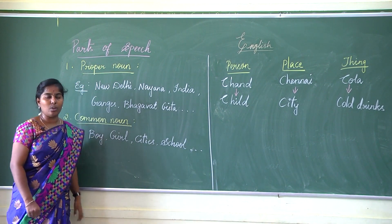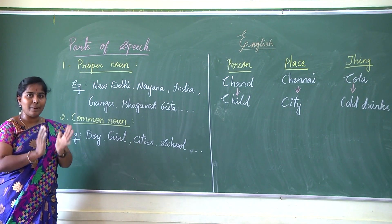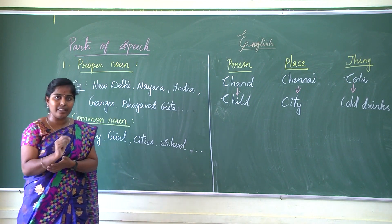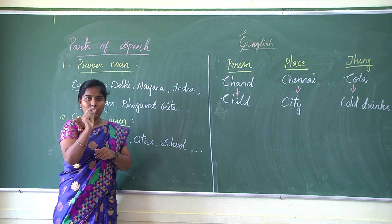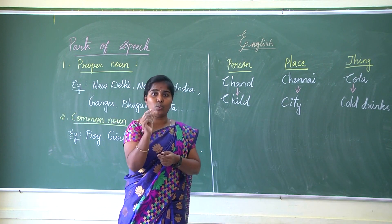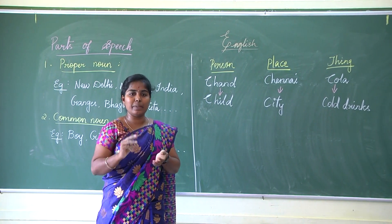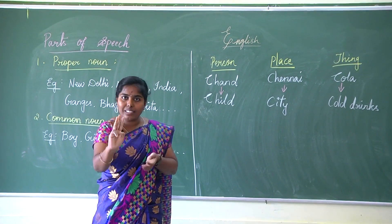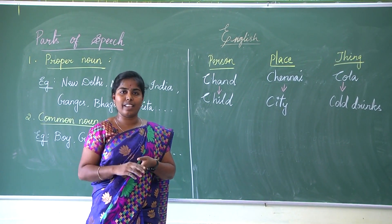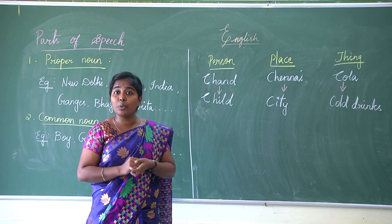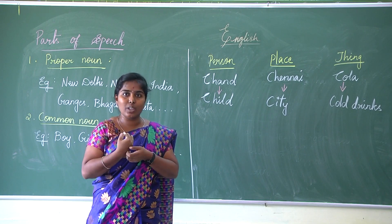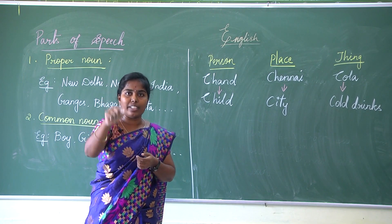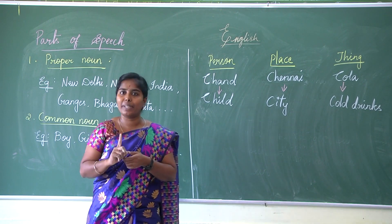What is meant by proper noun? Proper noun is when you talk about a person, place or thing in a specific or particular manner. For example, imagine three persons are walking on the road. If I call out 'hey,' all three will turn and look at me. But if I say 'hey Ramu,' only Ramu will turn. So there I am particularly pointing out Ramu — that is a particular noun, a proper noun.